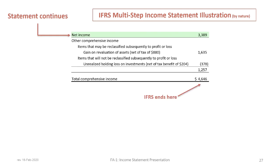The last part of the IFRS statement includes, of course, net income and then our other comprehensive income section — items that may be reclassified into profit and loss, being the gain on revaluation of assets of $1,635,000, and items that will not be reclassified, being the unrealized holding loss on investments of $378,000. This gives OCI of $1,257,000 and total comprehensive income of $4,646,000, which is the same result as in the single-step statement.